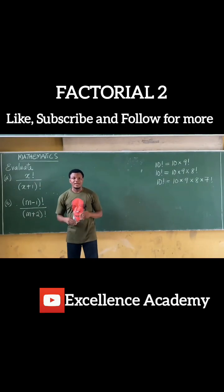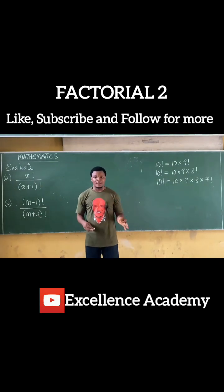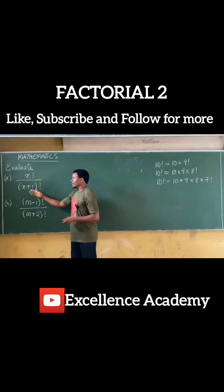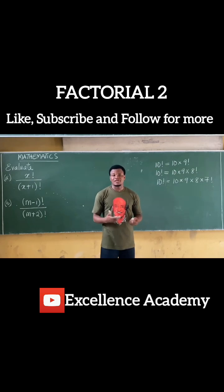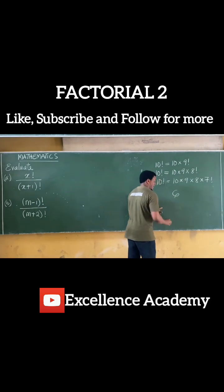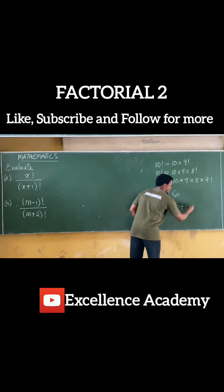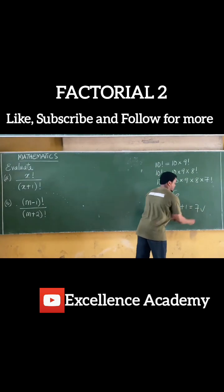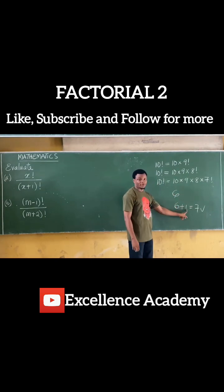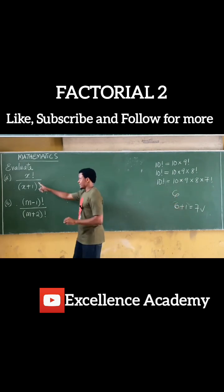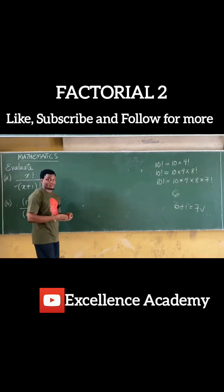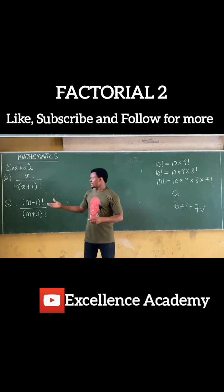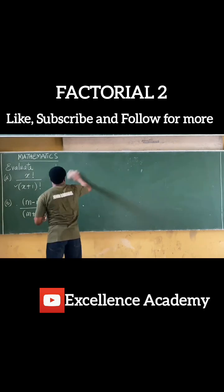For these two, your first task is to identify which is the greater number. If I have x factorial and x plus one factorial, which is greater? The answer is simple — if I have six and six plus one, that is seven, and seven is bigger than six. In essence, x plus one is always bigger than x, so the denominator is bigger than the numerator.